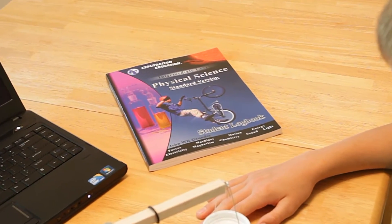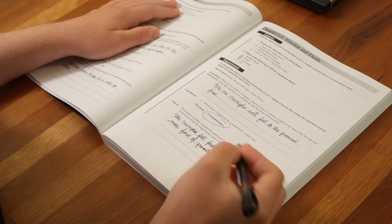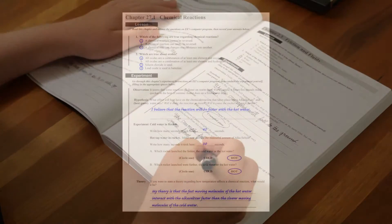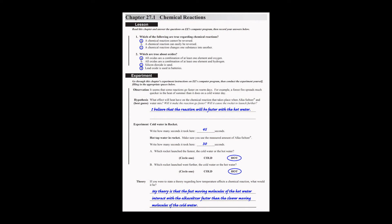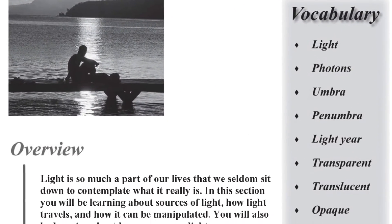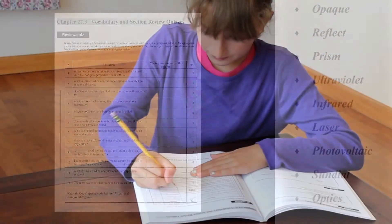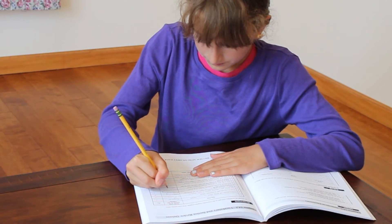Aside from the interactive text, the course also comes with a student logbook. This is where the students will record answers to their questions, write out their hypothesis, experiment data, and theories. At the beginning of each section, there is a vocabulary word list. The students will learn these words and then be quizzed on them. They will also complete eight section review quizzes.